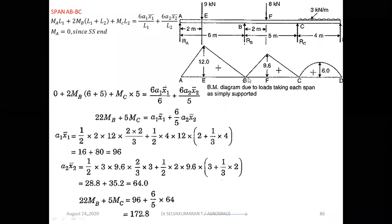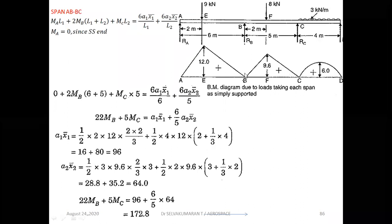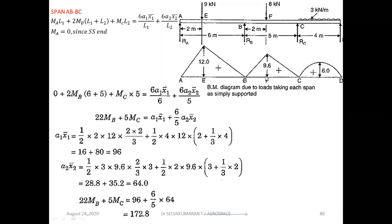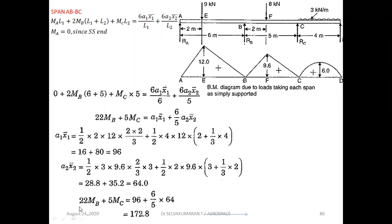A2x̄2 is the area of the bending moment diagram on span BC, with x̄2 measured from C. The area consists of two triangles: (1/2)(3)(9.6)×(2/3×3) and (1/2)(2)(9.6)×(3 + 1/3×2). After simplification, substituting A1x̄1 and A2x̄2 into the three-moment equation, we get the first equation: 22MB + 5MC = 172.8.